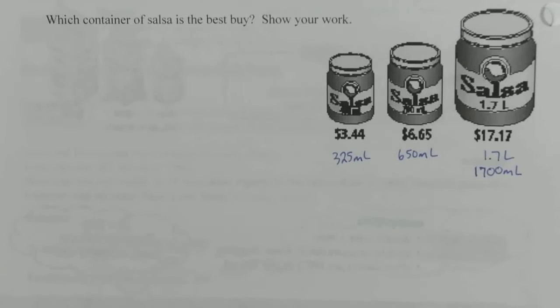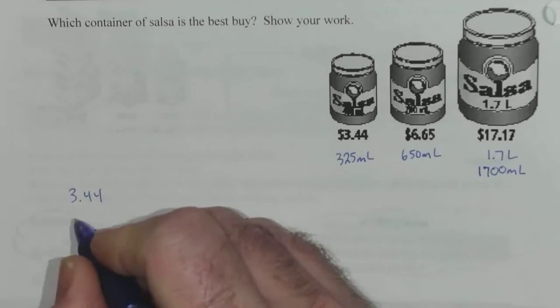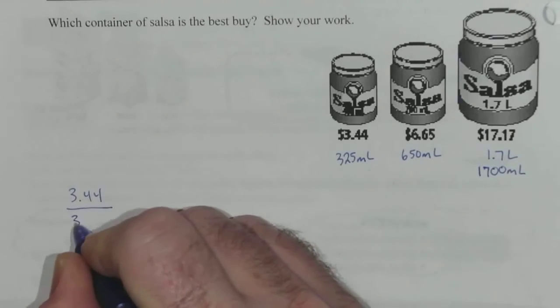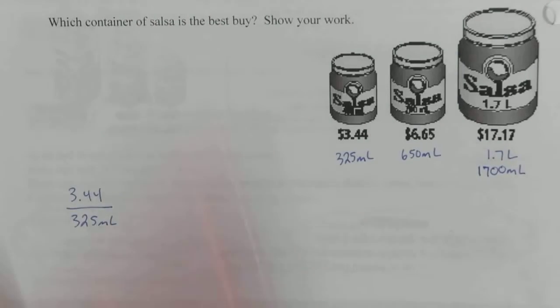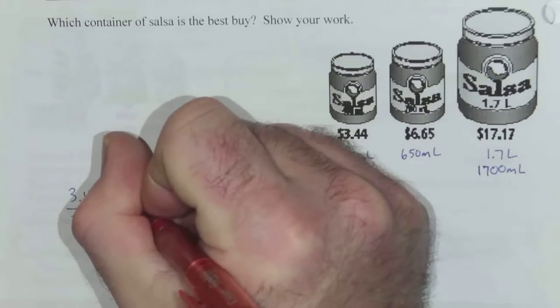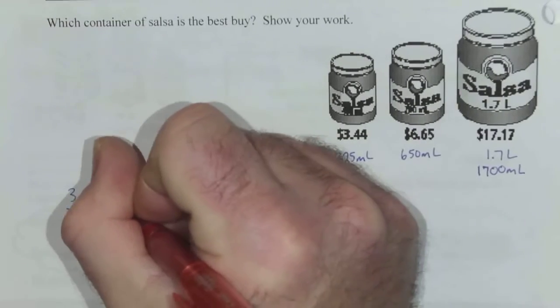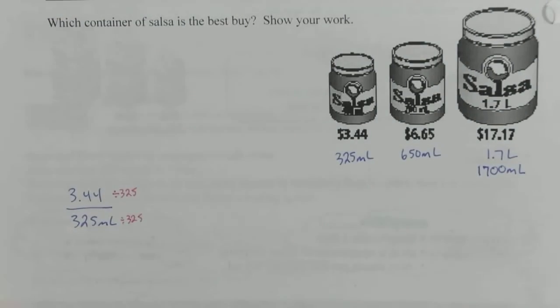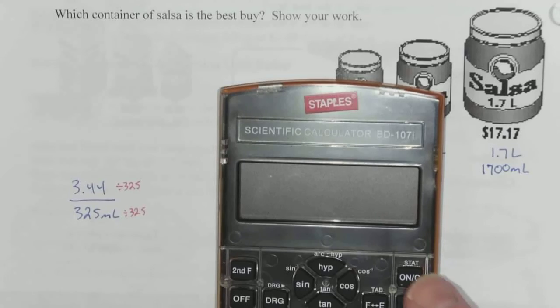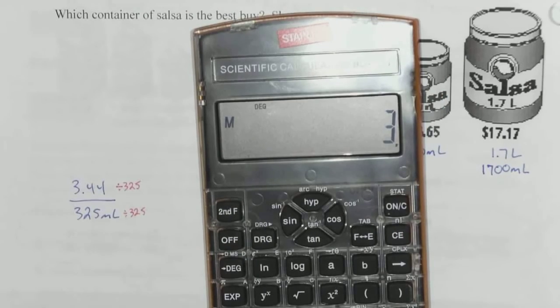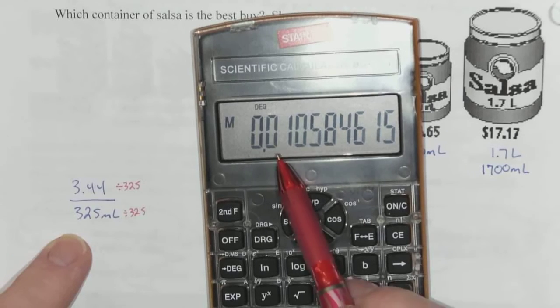For the smallest one, it's $3.44 for 325 milliliters. I want to divide the top by 325 and the bottom by 325 to turn this into a unit price. When you do that, 3.44 divided by 325, this is the number you end up with.